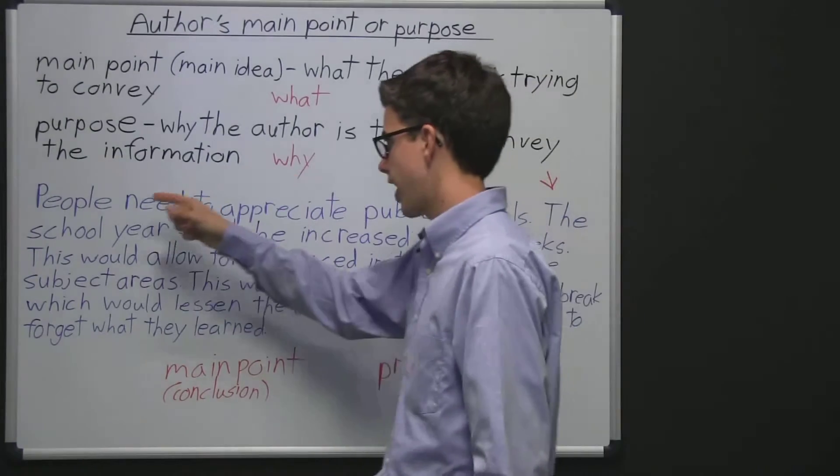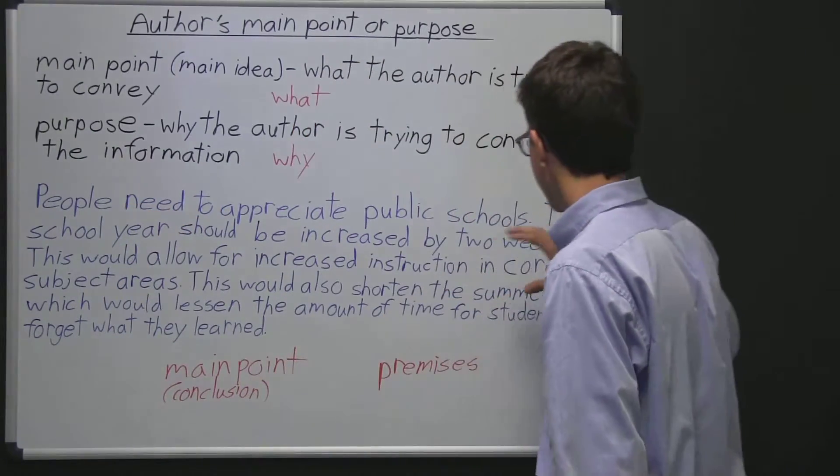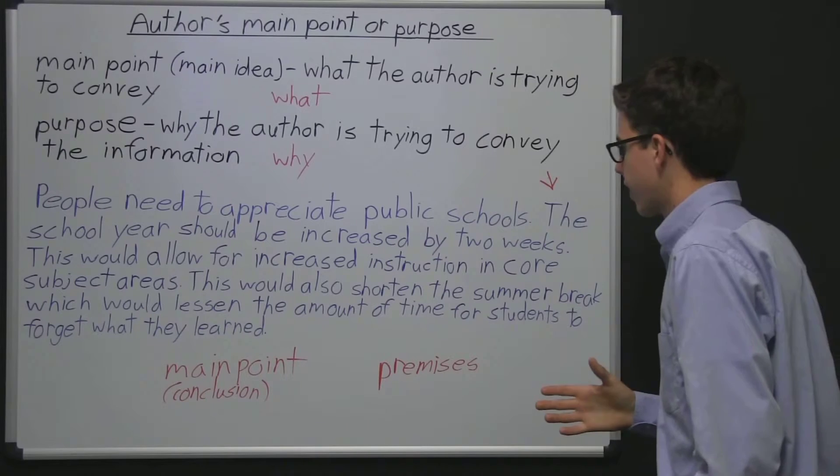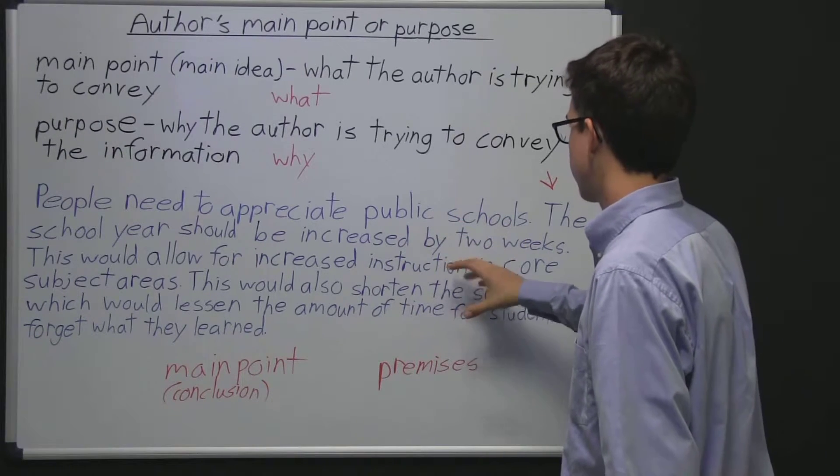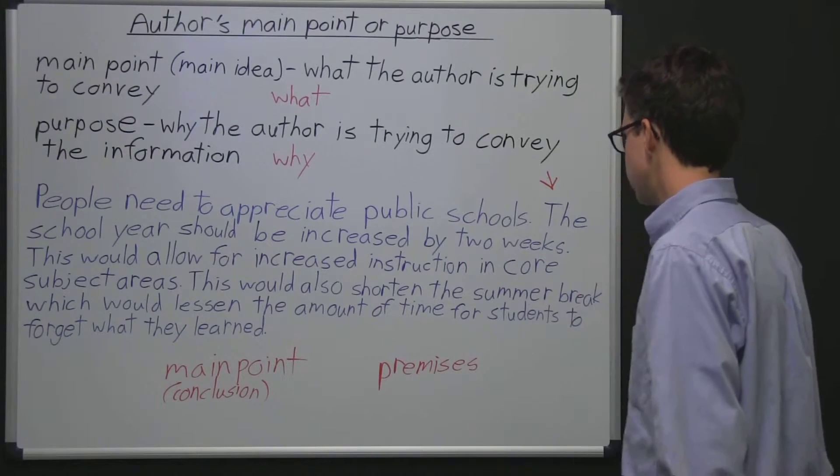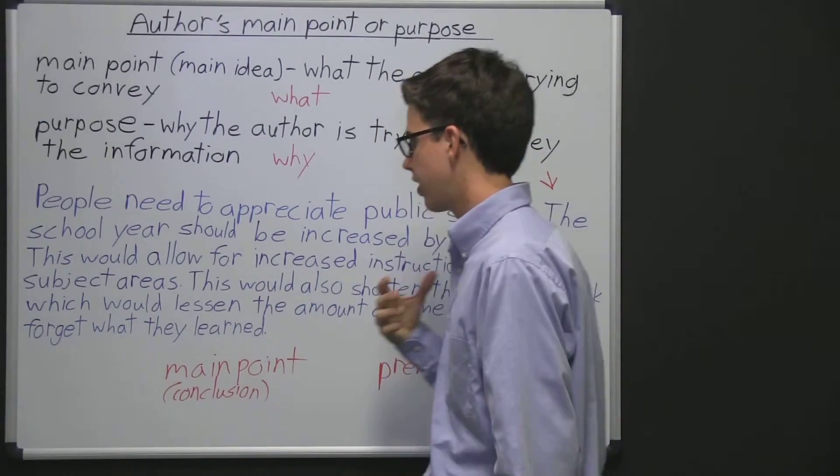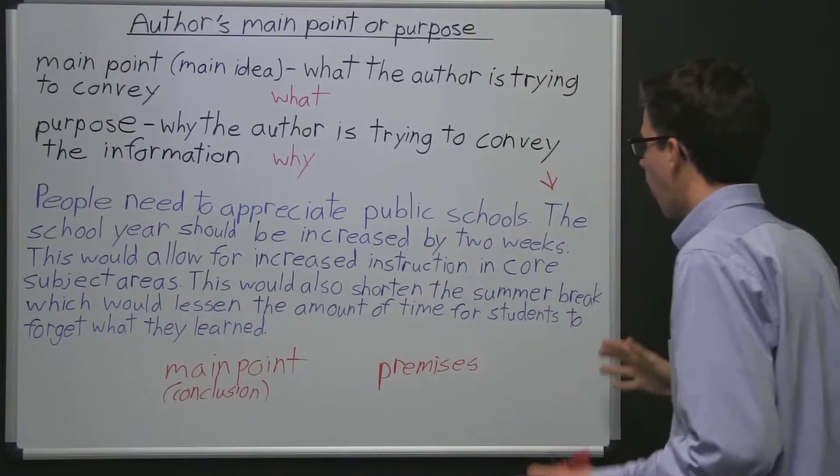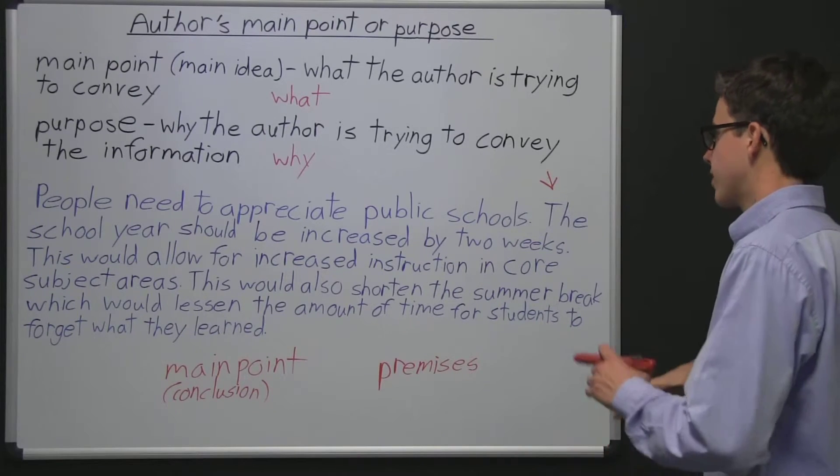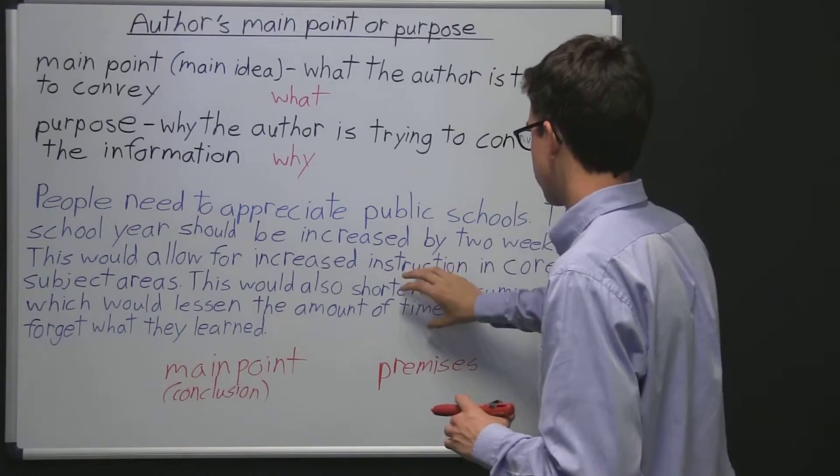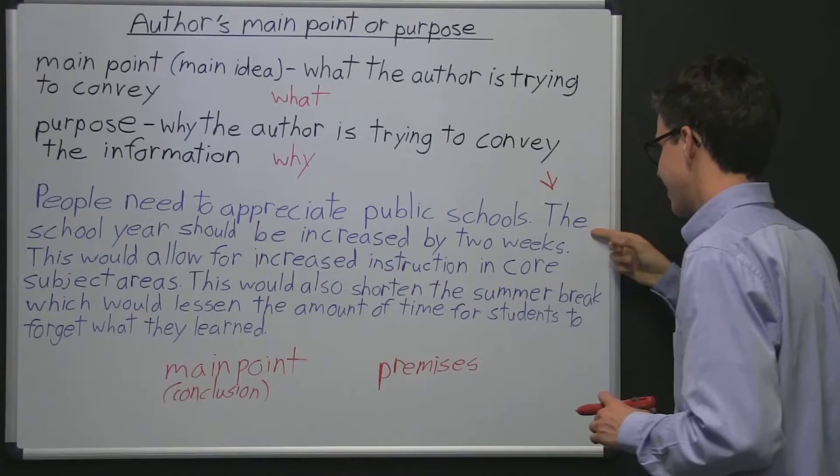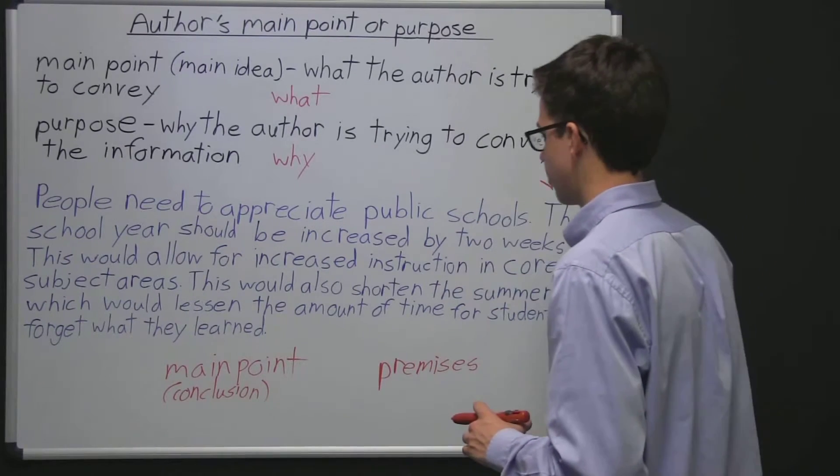This first sentence is really a distractor. Now in kind of a roundabout way, if the school year was increased by two weeks, then maybe people would begin to appreciate public schools more and begin to appreciate all that they're teaching children. But that's kind of a roundabout way. And these two premises right here relate more directly to this sentence here than they do this first sentence.